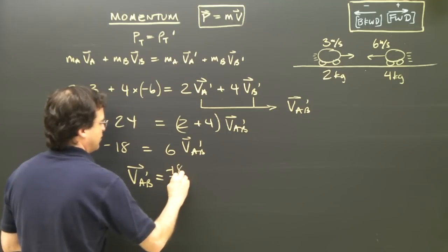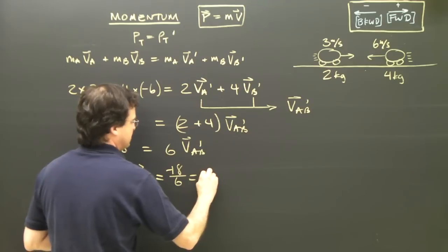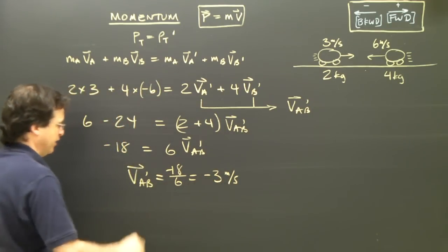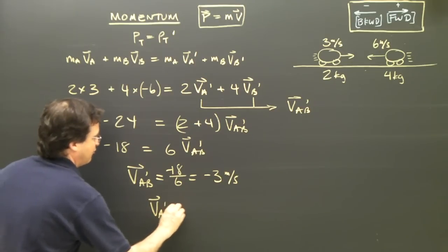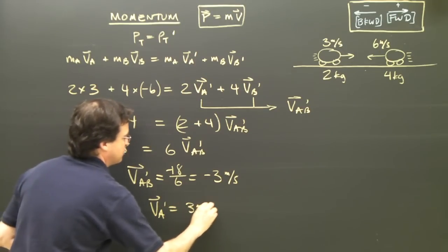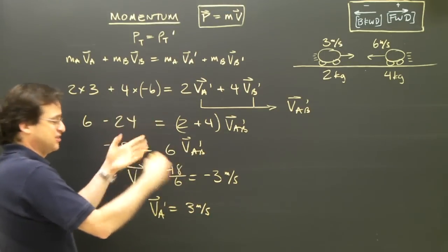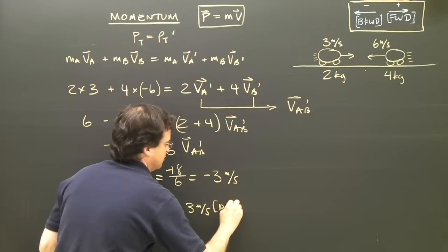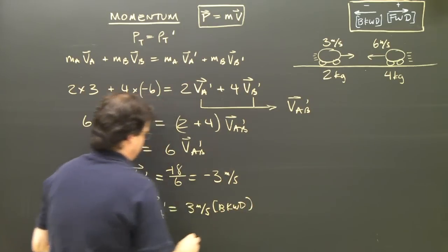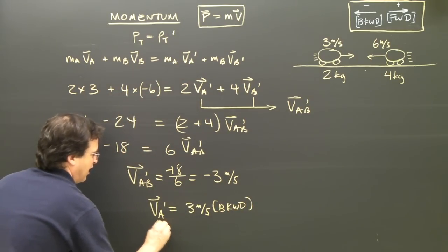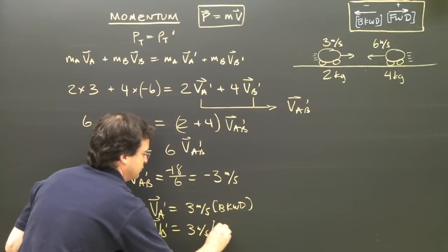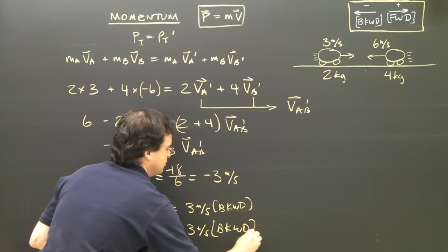Negative 18 divided by 6 is negative 3 meters per second. Which we can say vA afterwards is 3 meters per second. And since I didn't use east and west, it's left, it's negative, so it's backward. And vB afterwards is also 3 meters per second backward.